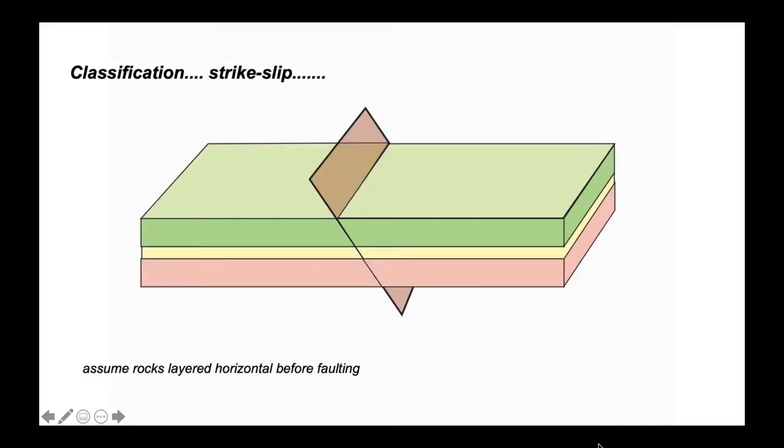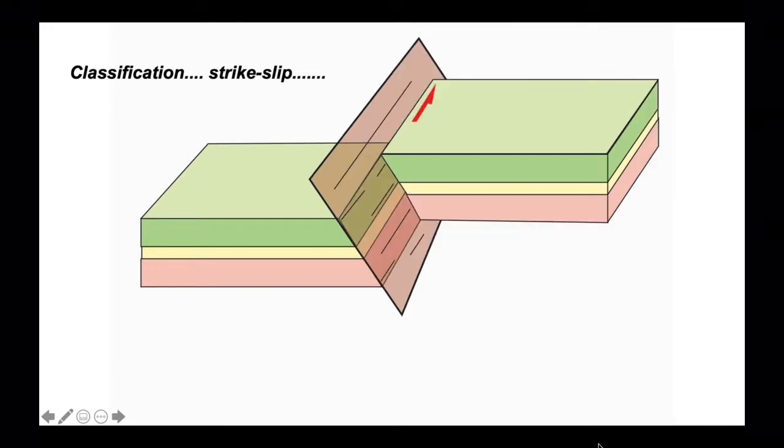But of course faults don't have to move up and down the dip direction. Let's see what happens when they move sideways along the strike of the fault. If we do that and look at our imaginary borehole, in this time the stratigraphy has not been offset, it's been moved sideways but the stratigraphic order is the same.